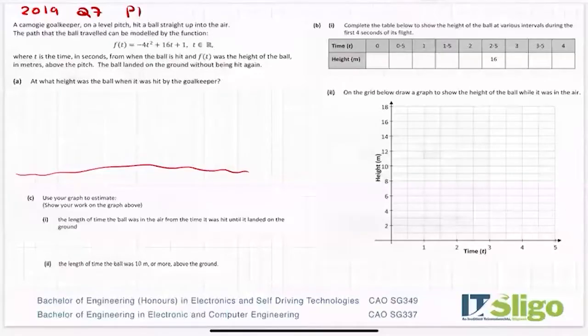Alright, let's have a look at the 2019 question on functions on the Leaving Certificate ordinary level course, question 7. A camogie goalkeeper on a level pitch hit a ball straight up into the air. The path that the ball travelled can be modelled by the function f(t) = -4t² + 16t + 1, where t is the time in seconds from when the ball is hit and f(t) is the height of the ball in metres above the pitch. The ball landed on the ground without being hit again.